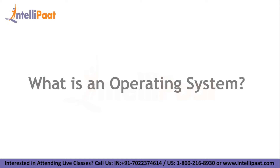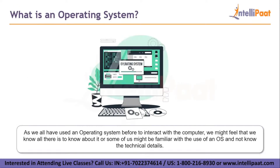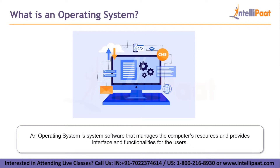Let's take a look at what exactly is an operating system. As we all have used an operating system before to interact with the computer, we might feel we know all there is to know, or some of us might be familiar with its use but not know the technical details. An operating system is a system software that manages the computer's resources and provides interface and functionalities for the users. It basically acts as a middleman between the physical hardware of the computer and the user.